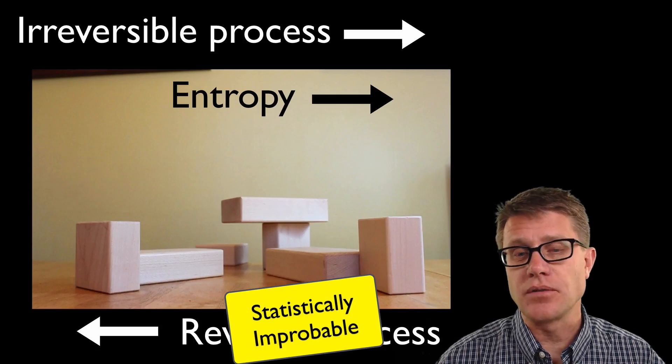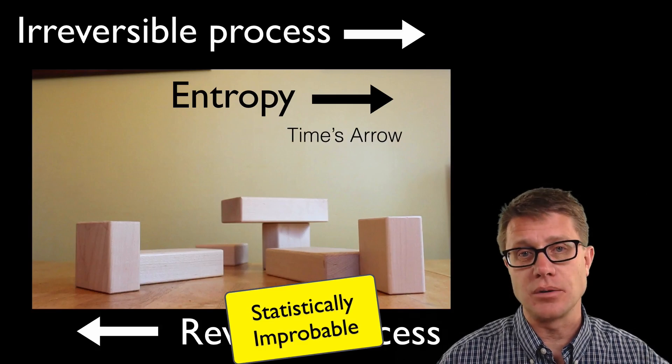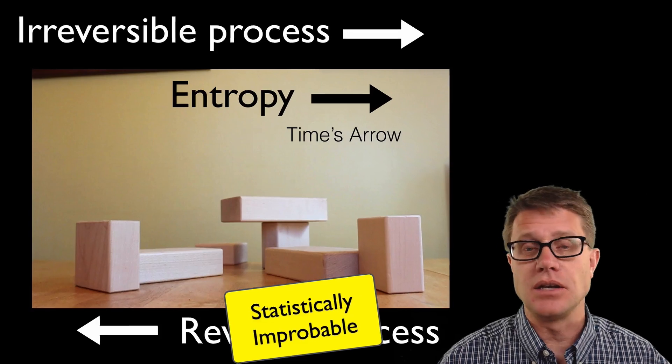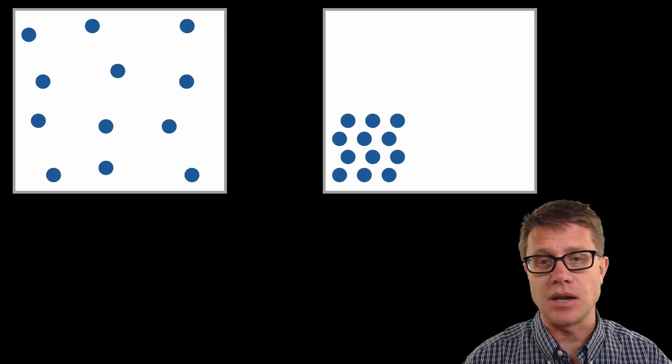Sometimes you'll hear entropy referred to as time's arrow. It's going to move in the direction of time in an irreversible process. So let me give you an example of that.